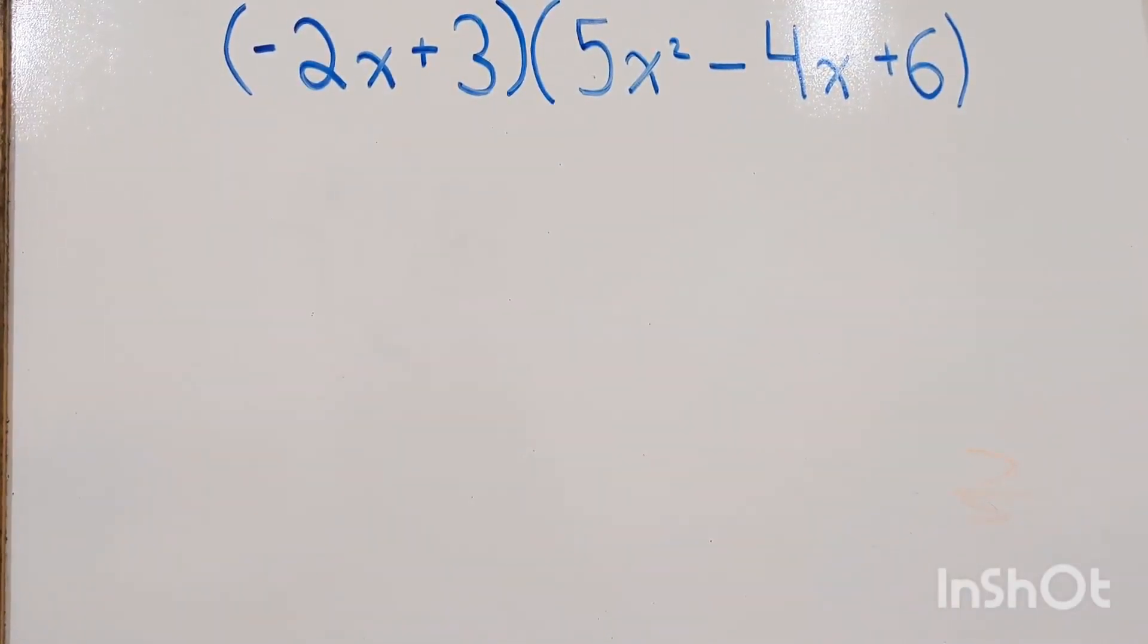How to multiply polynomials. Here we have two polynomials, negative 2x plus 3 and 5x squared minus 4x plus 6. An easy way to multiply these is to use the box method.